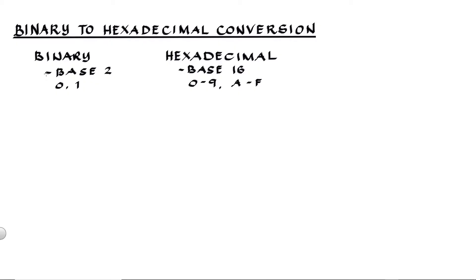Hello, it's Pinkpoint. In this video, we will convert binary numbers into hexadecimal numbers. A binary is a base 2 number system using digits 0 and 1, while a hexadecimal is a base 16 number system using digits from 0 to 9 and letters from A to F. For our conversion,